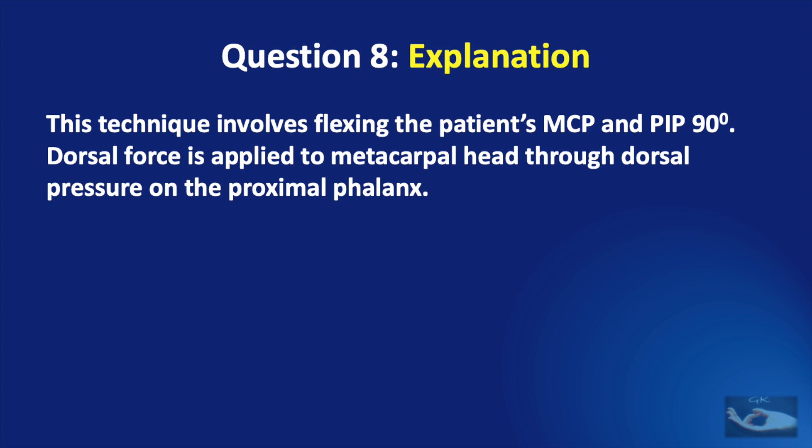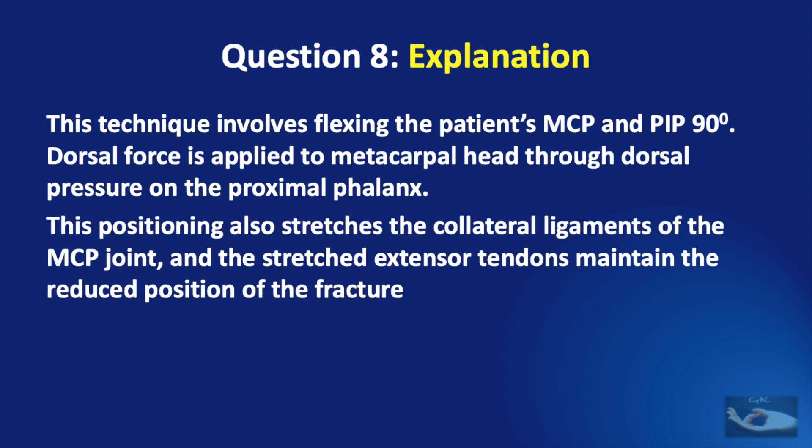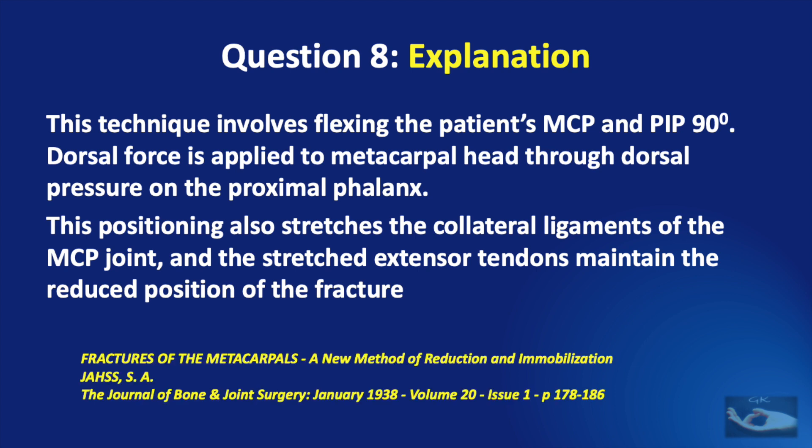Dorsal force is applied to the metacarpal head through dorsal pressure on the proximal phalanx. This positioning also stretches the collateral ligaments of the metacarpophalangeal joints, and the stretched extensor tendons maintain the reduced position of the fracture. This maneuver is usually done for reducing fractures of the metacarpal neck or head. This technique was described by S.A. Jars in 1938.